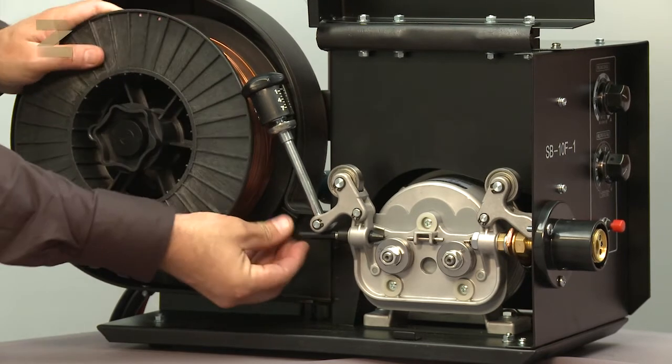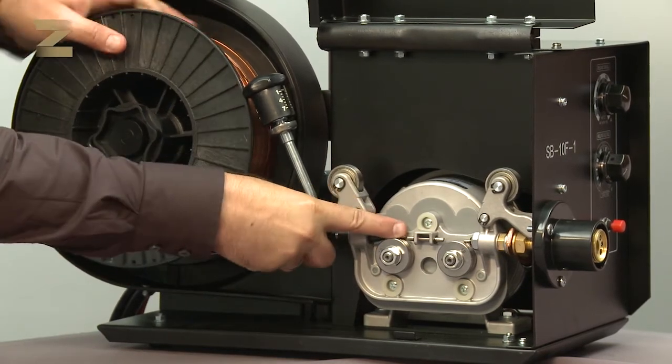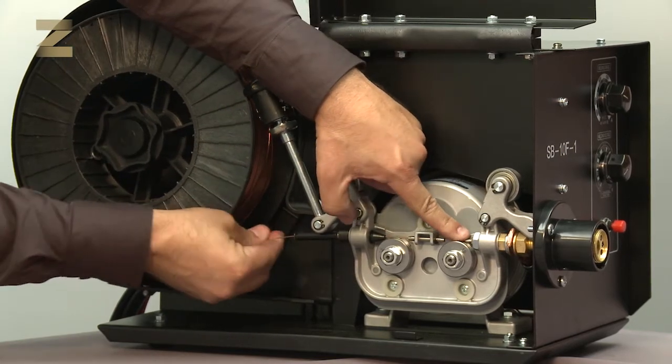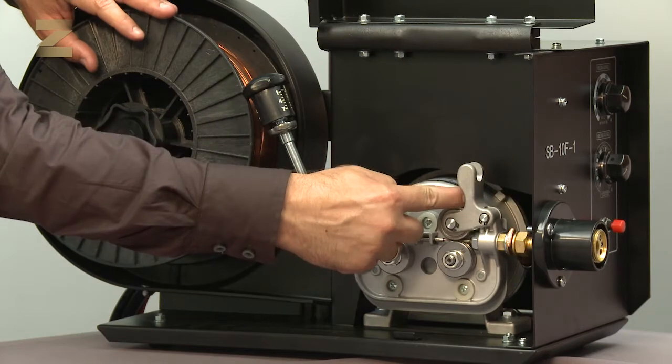Now insert the wire through the guide into the feeder until it reaches the handle outlet. Hold the top wheels facing down. Lock the lever and tighten well.